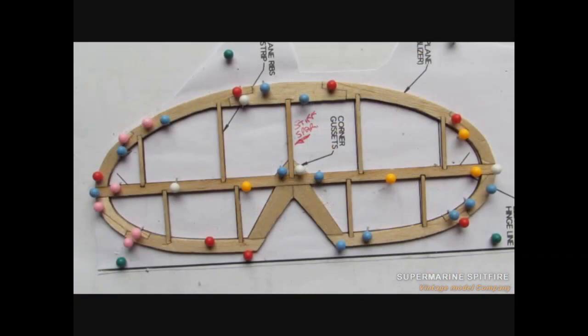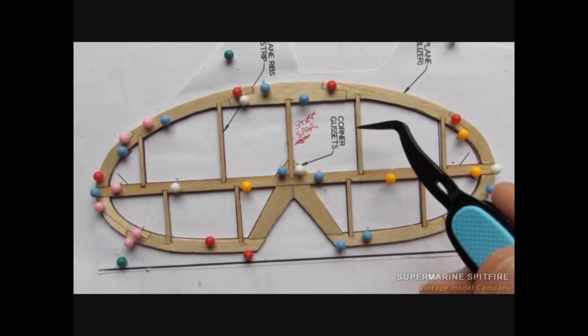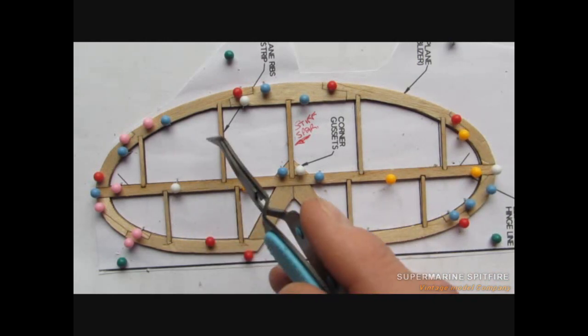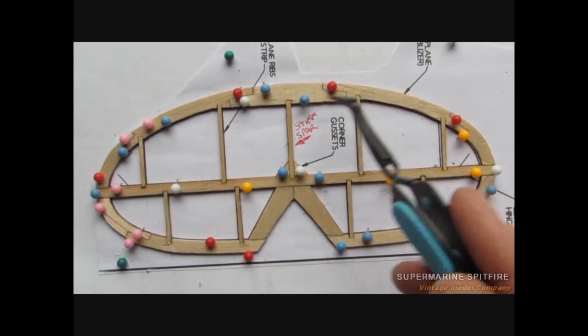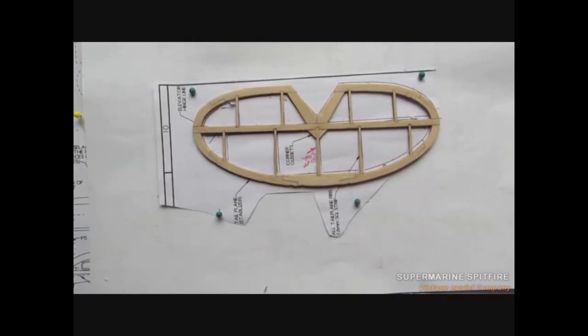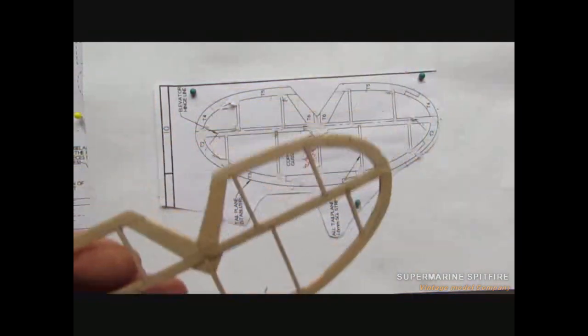Once we're happy that everything's right and glued and pinned down, you can just leave that to dry. Perhaps I should just mention at this point, the top central spar is made from the hard balsa wood sheet, and don't forget to put in your corner gusset strengtheners.